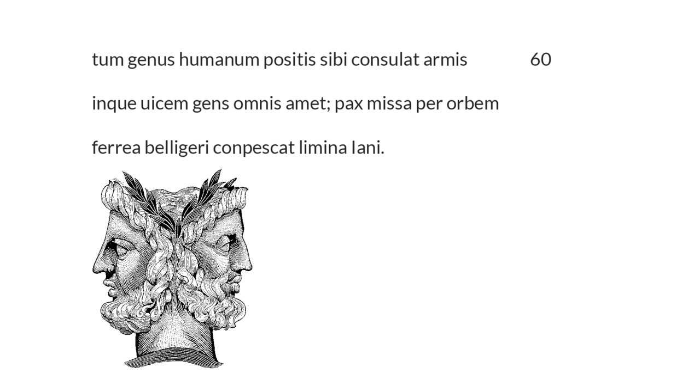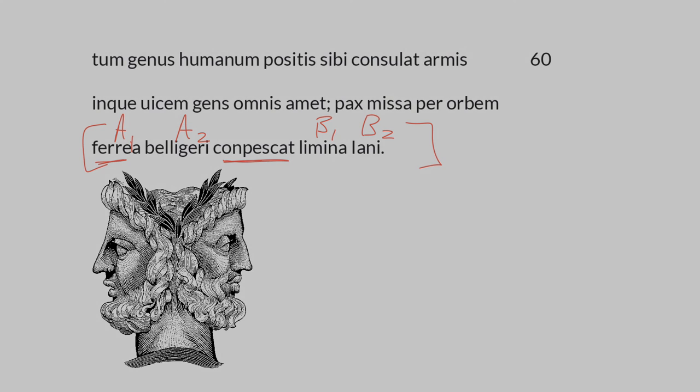We again see interlocking word order. And we could even consider this not quite but nearly a golden line. So we have ferrea, which is the adjective. Belligeri, another adjective. Then we have noun, limina, that's noun. And Iani, the second noun. So we could say A1, A2, we could say then B1 because that corresponds to ferrea and B2 because it corresponds to belligeri. Then with the verb placed right in the middle, we have quite a bit of symmetry. It's actually a lovely line.